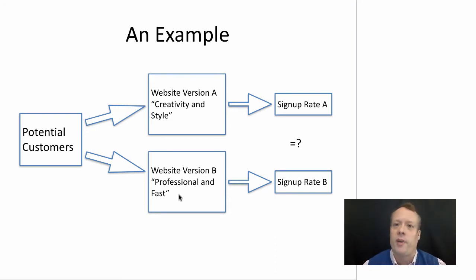What we do is split our customers in half and send half to each version of the website. Then we observe how many sign up under version A (signup rate A) and version B (signup rate B). The question is: are these two rates equal or different? If one is much better than the other, we should use that one instead.